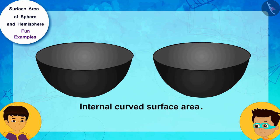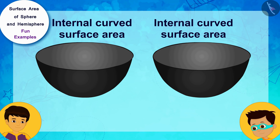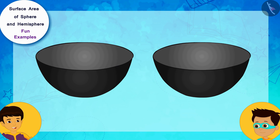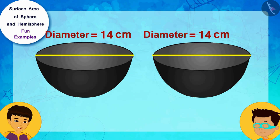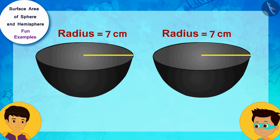Oh, is it? I can easily find this. These two bowls are exactly the same. So, their internal curved surface area will also be equal. The bowl is a hemisphere and has an internal diameter of 14 centimeters. This means, the internal radius of each bowl is 7 centimeters.